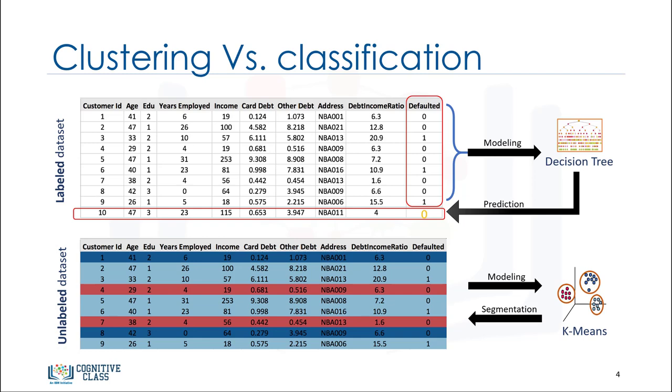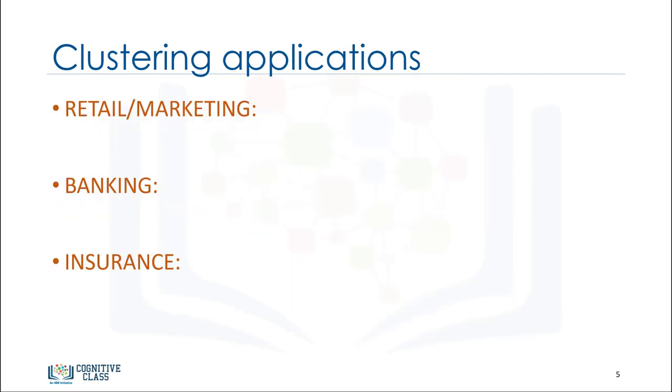While I'll be giving you some examples in different industries, I'd like you to think about more samples of clustering. In the retail industry, clustering is used to find associations among customers based on their demographic characteristics and use that information to identify buying patterns of various customer groups.